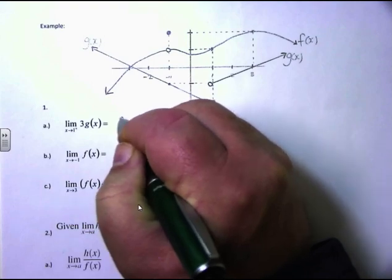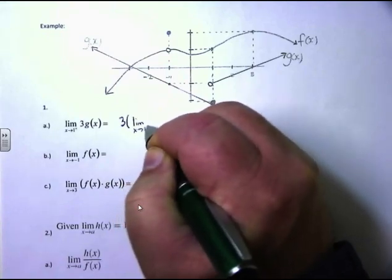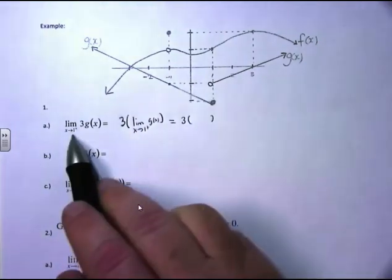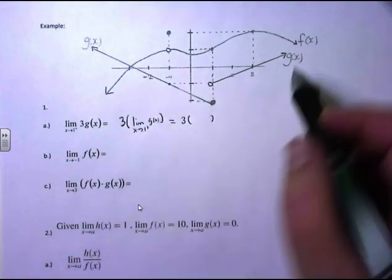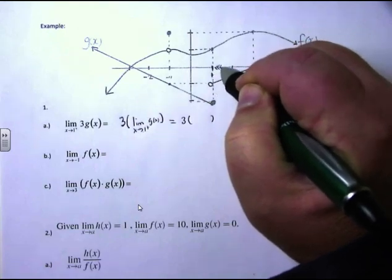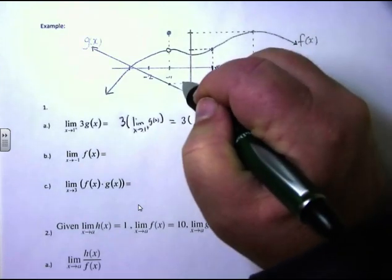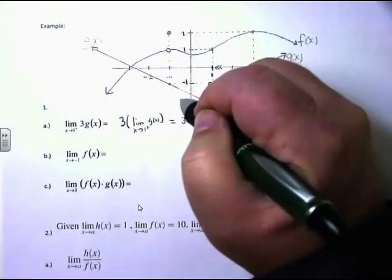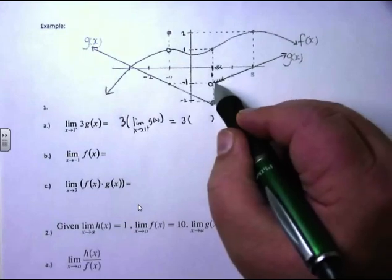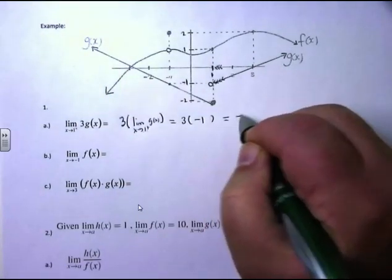This would be equal to 3 times the limit as x approaches 1 from the plus side of g of x, using your limit properties — the limit goes wherever the function is going. Now, we're taking the limit as x approaches 1 from the plus side of g of x. Here's 1 on the plus side, and as I approach 1 from the right, my functional value is going down to negative 1. So, with that 3 out front, the answer is 3 times negative 1, which is negative 3.